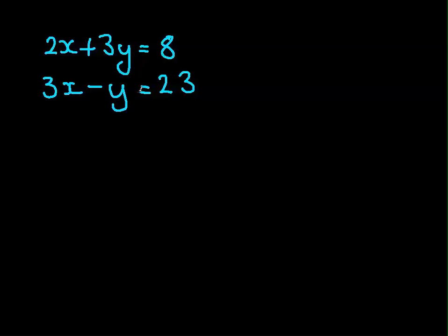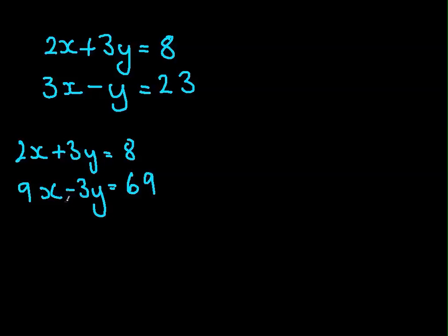What you need to do is we need to find a way to eliminate either x or y. And so over here you have 2x and 3x, they're different, and 3y and 1y. So what we could do is multiply the second one by 3 to get 3y on the bottom as well. So if we were to do that, we would then get over here 2x plus 3y equals 8, and times by 3 would get 9x minus 3y equals 69. And now that we have these, we can eliminate y.